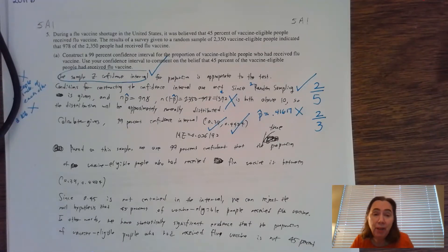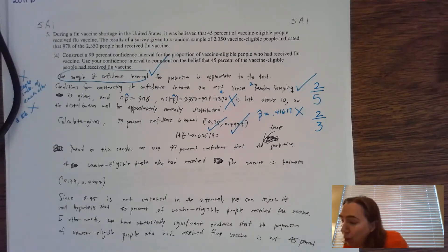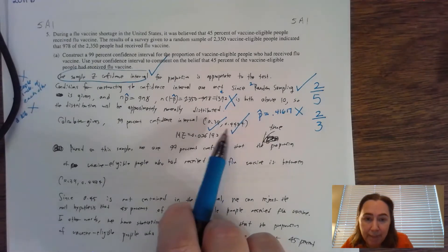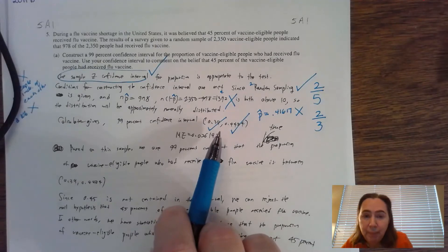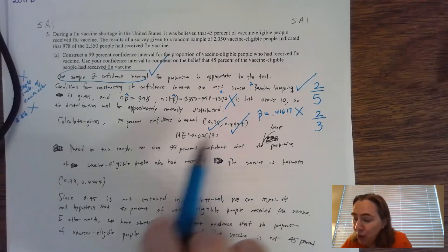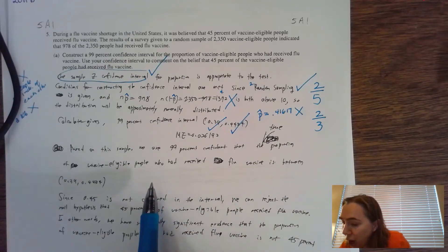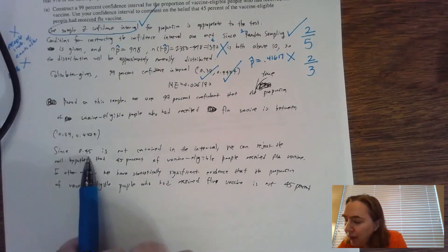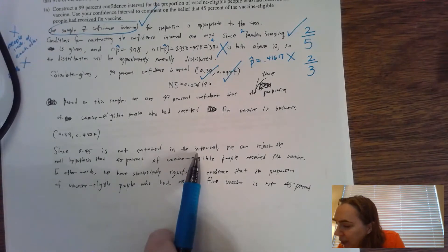I hope you wrote it down though, but it didn't ask for it. No matter what, when you have an interval, interpret your interval just in case. In this case, they didn't look for it. They do want you to comment on that whole 45% thing. Look carefully: where does 45% fall? It is not inside, so that means your answer has to have that it's not plausible.